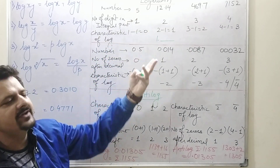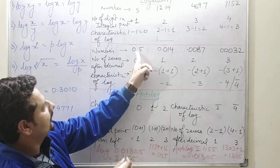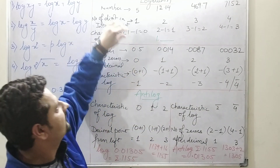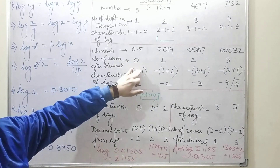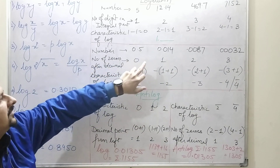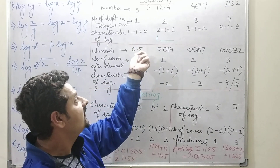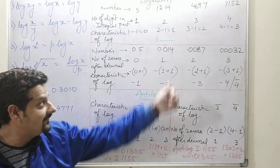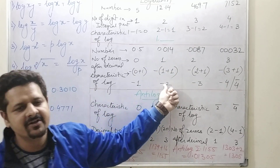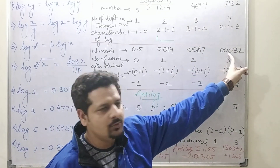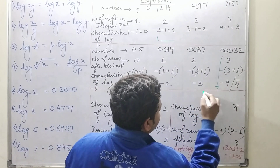For numbers like 0.5, 0.014, and 0.0087, you need a different approach — you count the number of zeros after the decimal point. For 0.5, there are no zeros after the decimal, so the formula gives −(0 + 1) = −1, making the characteristic 1̄ (bar 1). For 0.014, there is one zero after the decimal, so −(1 + 1) = −2, written as 2̄. For 0.0087, there are two zeros, giving −(2 + 1) = −3, written as 3̄. For three zeros it would be 4̄.